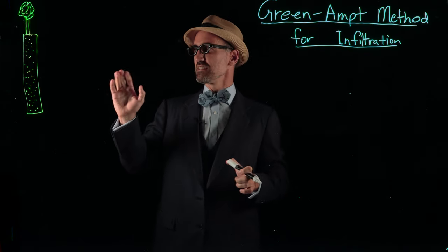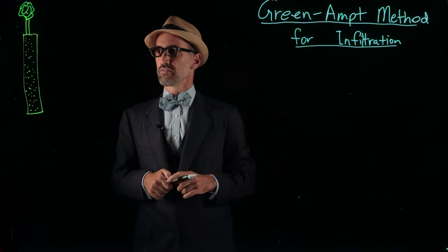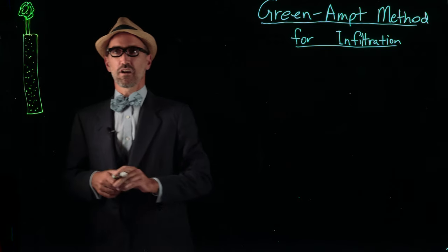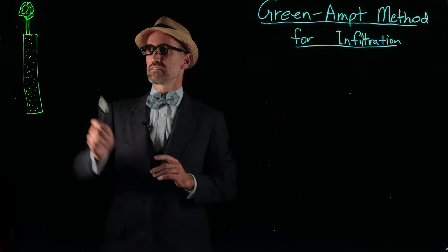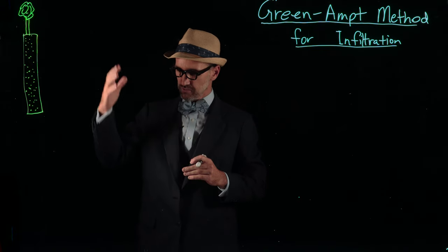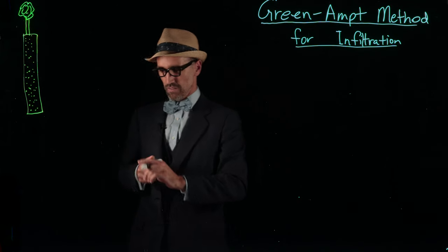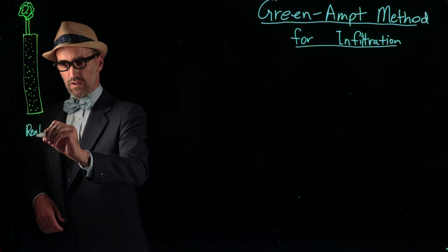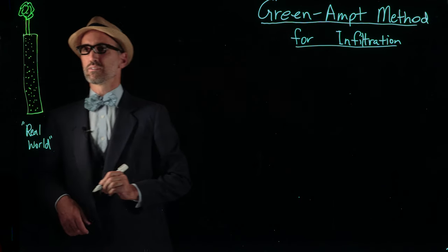What we're going to calculate is infiltration. This diagram I've drawn over here is a soil column. All these dots here are sand grains, and on top of that soil column is a tree growing out of the land surface. I'm going to call this the real world - a little cross-section through the real world.